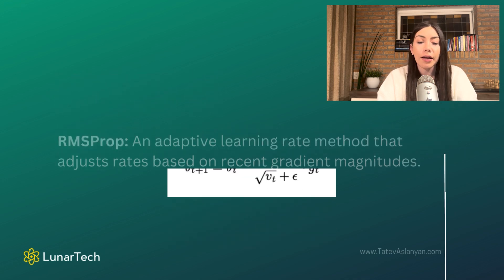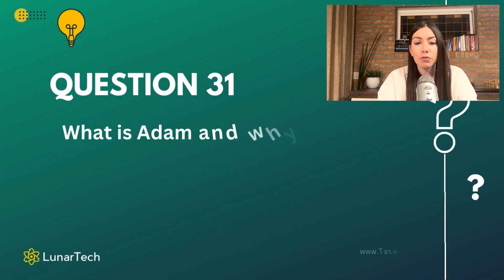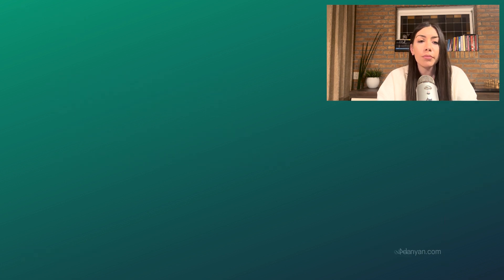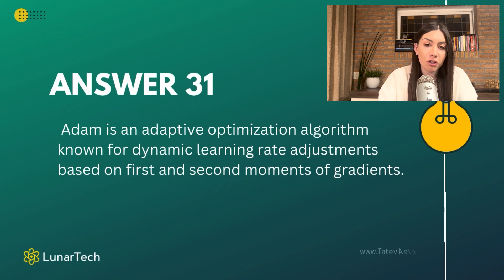The next question is, what is Adam and why is it used most of the time in neural networks? Adam is an adaptive optimization algorithm that is known for its dynamic learning adjustments based on the first and second moments of the gradients.